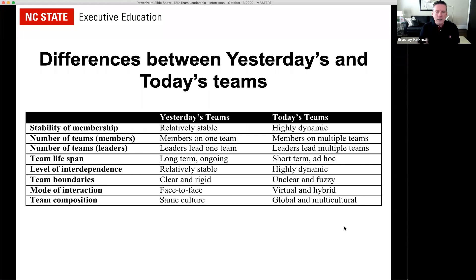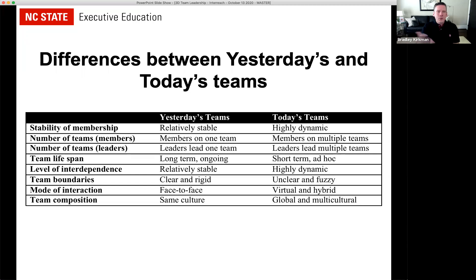The reason we decided to write this book is that most of the books out there on teams and leading teams were really written about what I call yesterday's teams. When you look at the characteristics of teams on this slide and compare yesterday's teams to today's teams, you can see very quickly that today's teams are unrecognizable in just the last 10 to 15 years. In the past, teams were relatively stable and people were on them for a long time. Today, people are coming and going constantly, and we have people in our book who were on 10, 12, 15 teams at the same time.